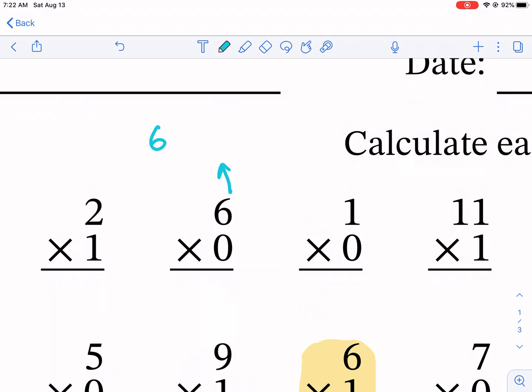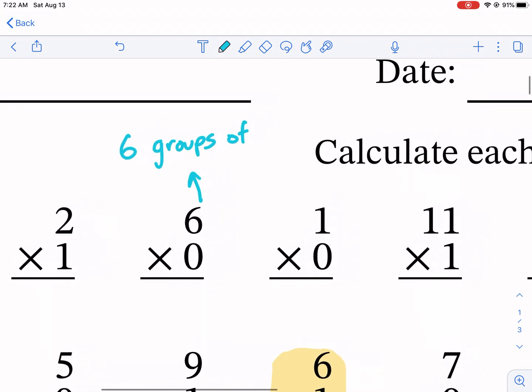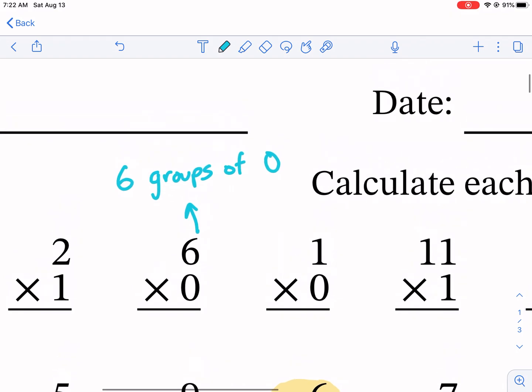Groups of is kind of like the multiply, what that symbol means. Anytime you're multiplying it means how many groups of. Of is kind of like the keyword in multiply because we're talking about multiple groups. Multiplying groups of zero.